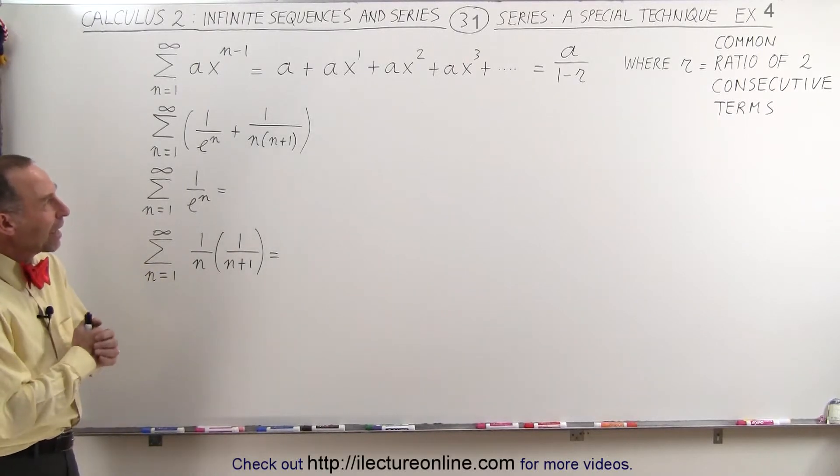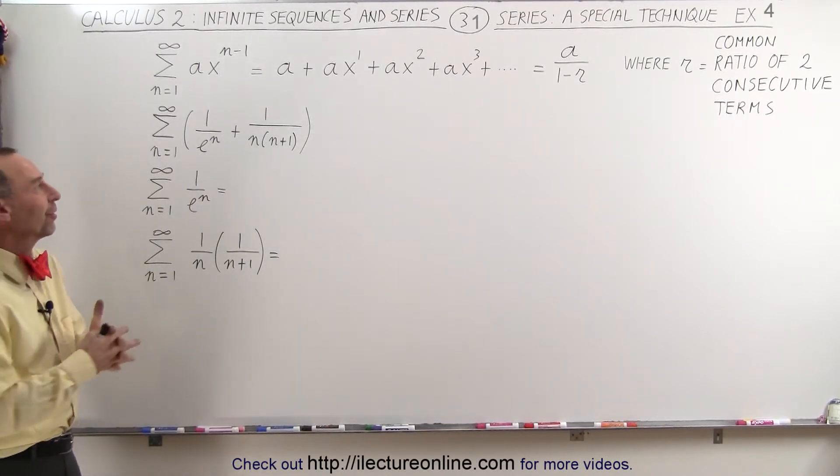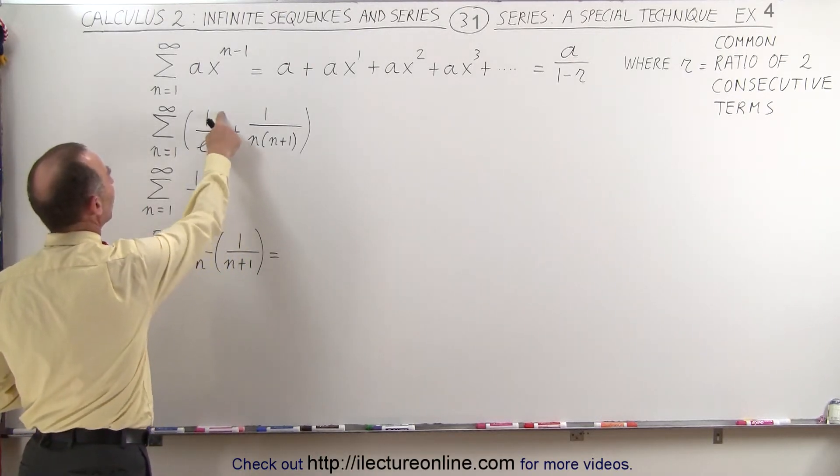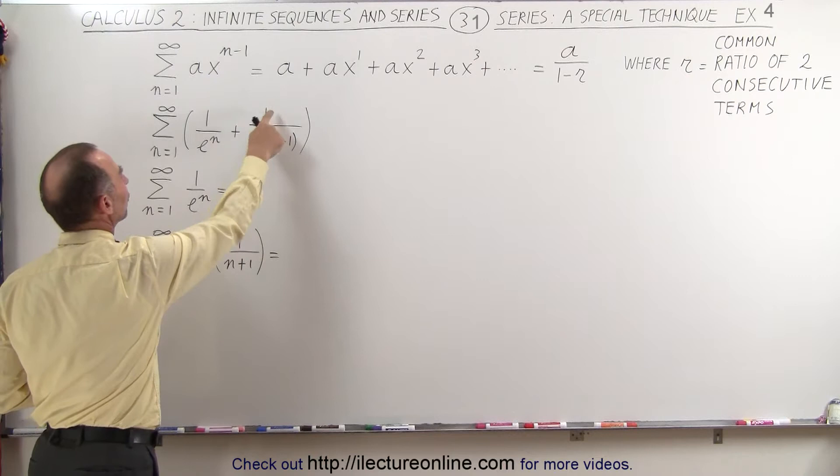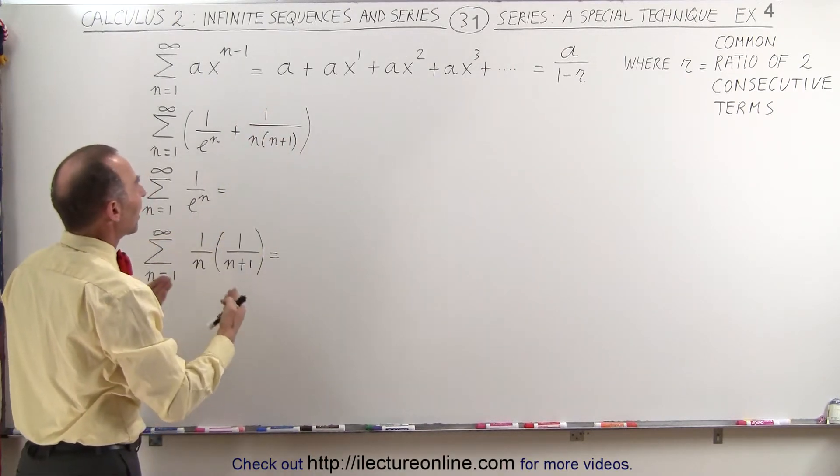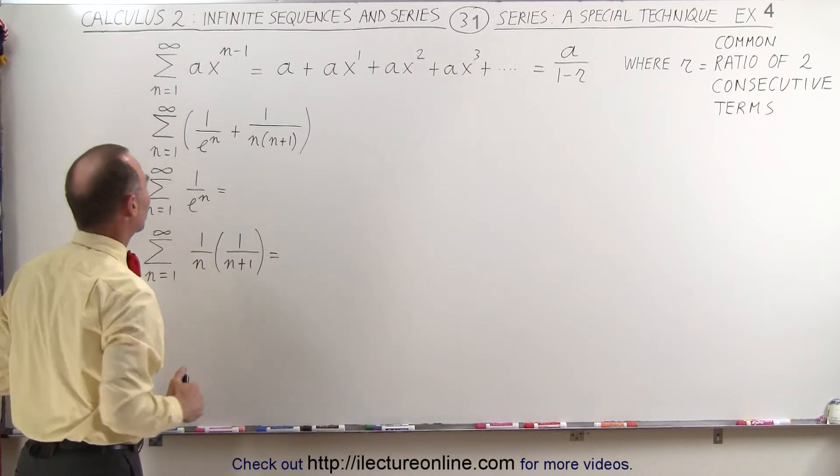Welcome to ElectronLine. Here we have something a little bit more challenging for us: an infinite series that has two separate terms, 1 over e to the n plus 1 over the quantity n times n plus 1. And we're trying to find the sum of this infinite series.